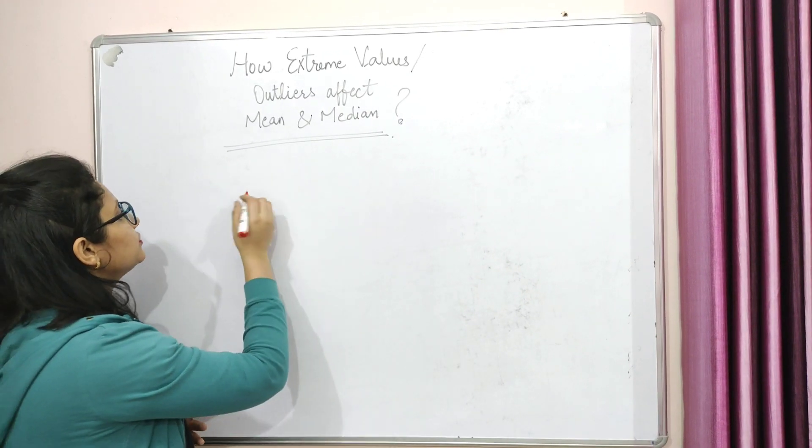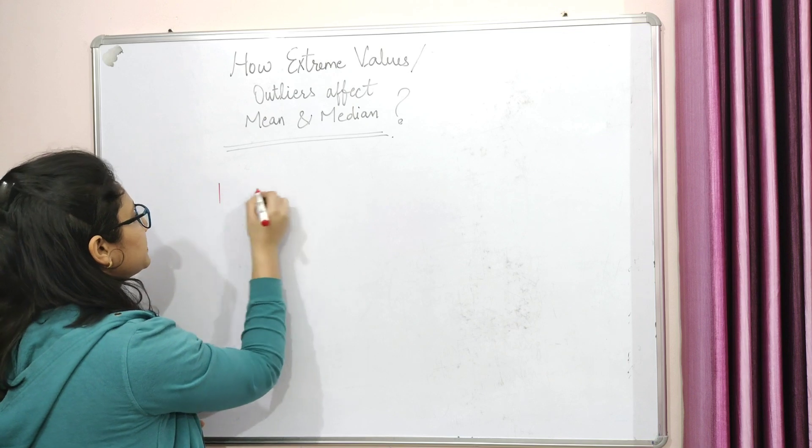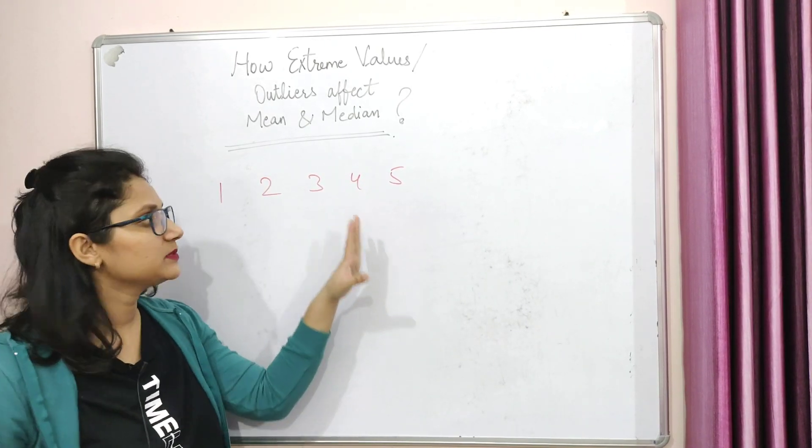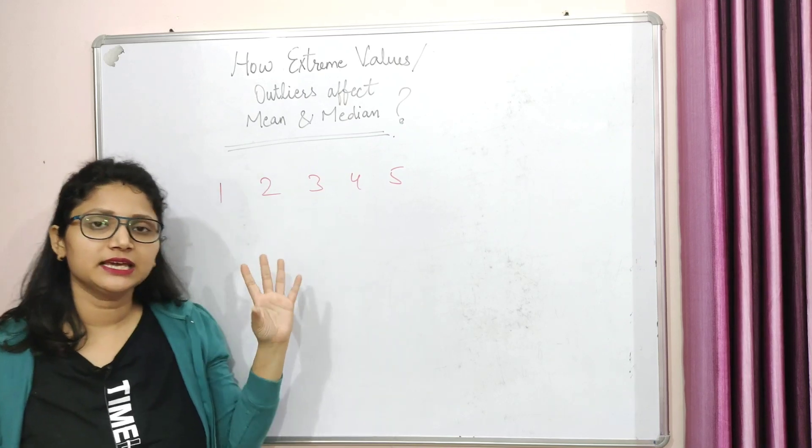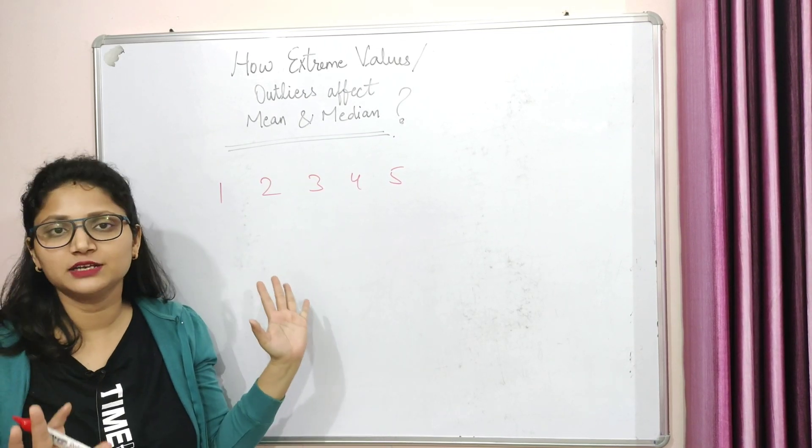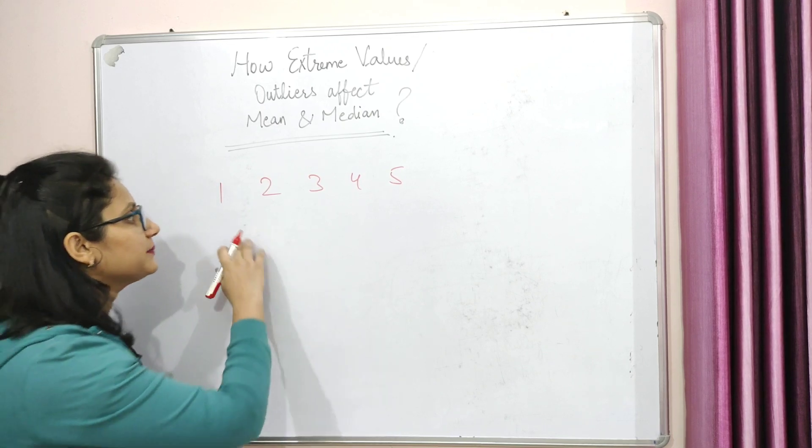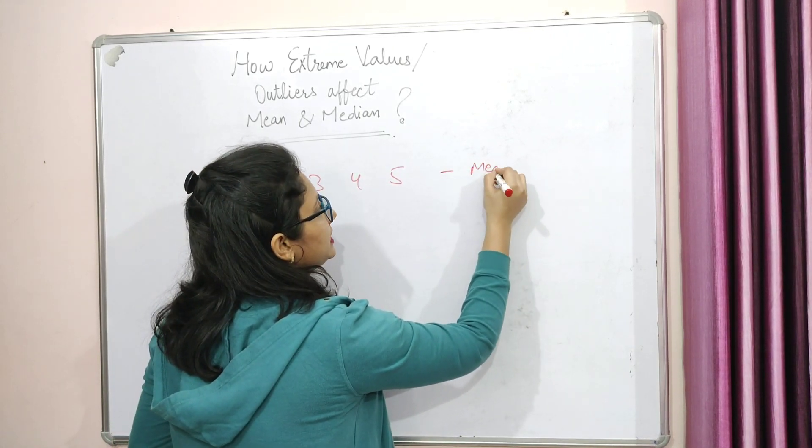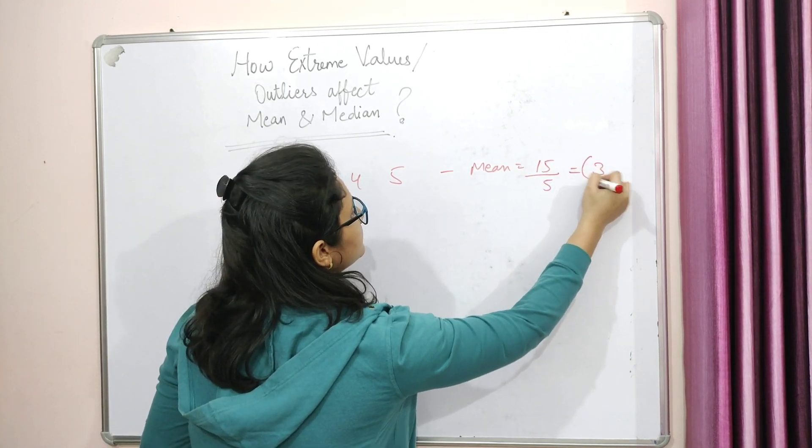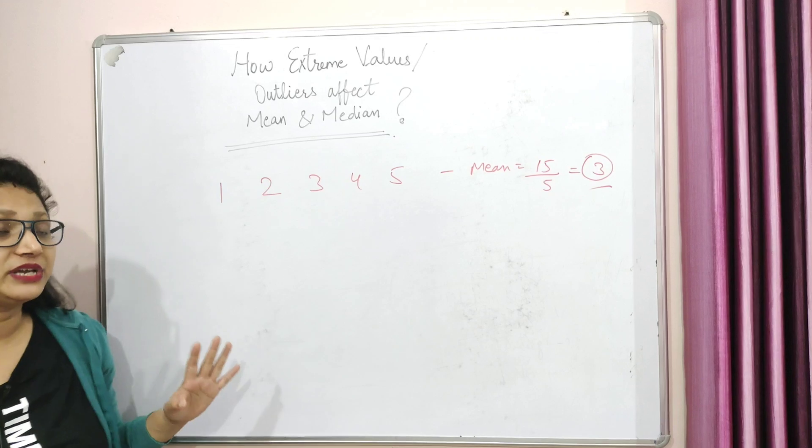So let's just assume this data set. I'm giving you a very simple data set. So suppose this is your data set in which 5 values you have given. Okay, this is a very normal curve, there are very consistent values, all these values are very consistent.